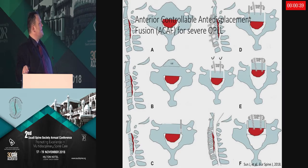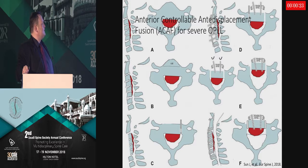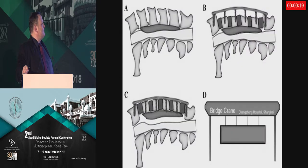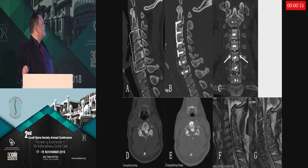Another procedure — one I unfortunately don't have much experience with — comes from Shanghai: anterior controllable antidisplacement fusion (ACAF). Here, a third of the vertebral body is cut, osteotomies are performed on the left and right, and the whole block of vertebra with the OPLL is pulled forward away from the cord. The sagittal view demonstrates this nicely. It's a beautiful technique that I have to try.